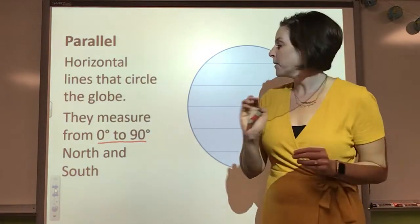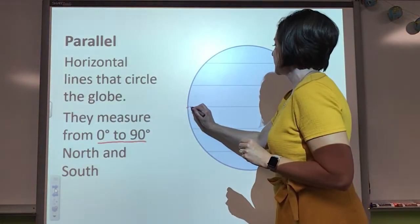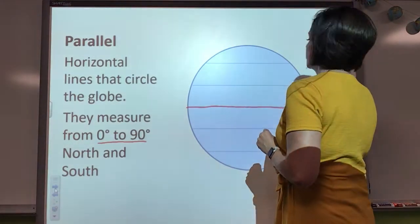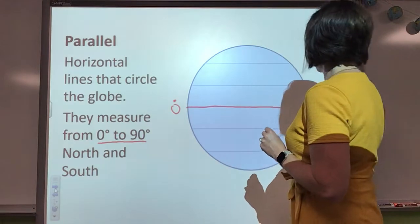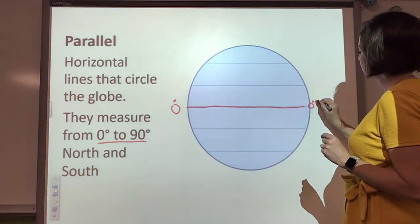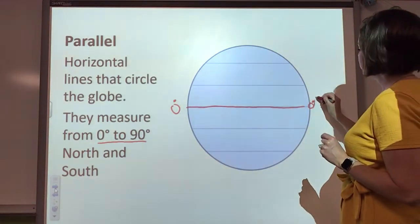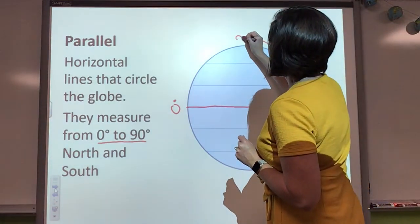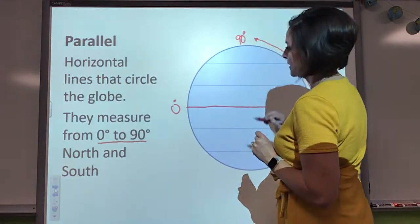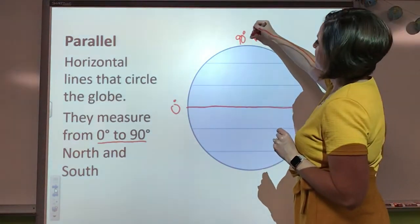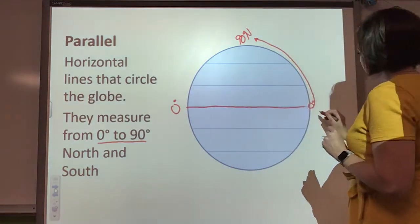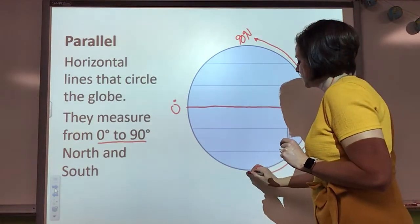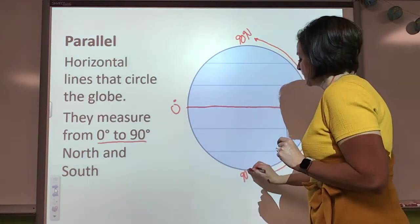So just a little bit ago, I said that our equator was zero degrees. So zero degrees, and what it's going to do is it's going to measure zero to 90 degrees. And then, of course, this is north.